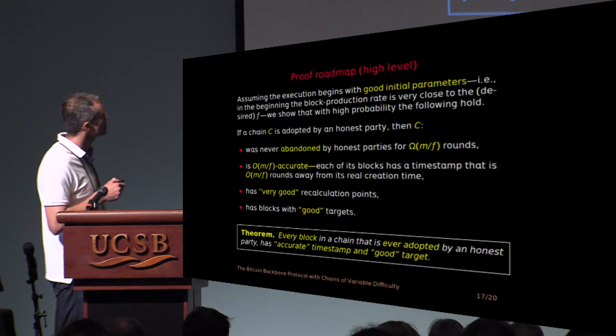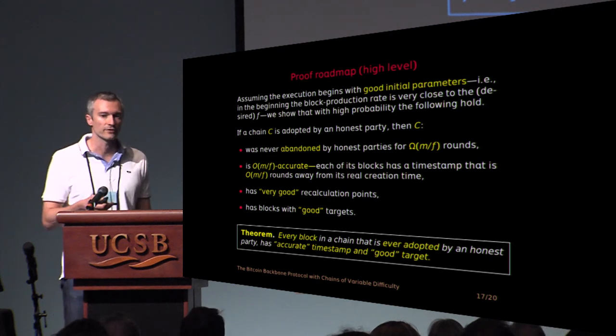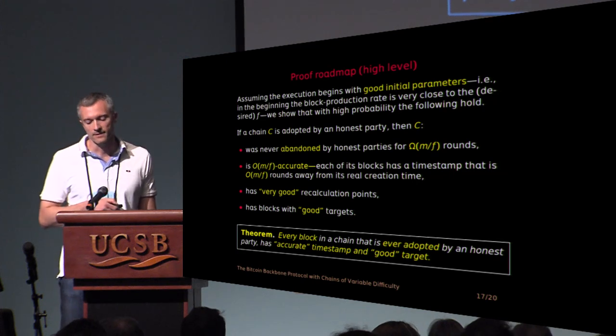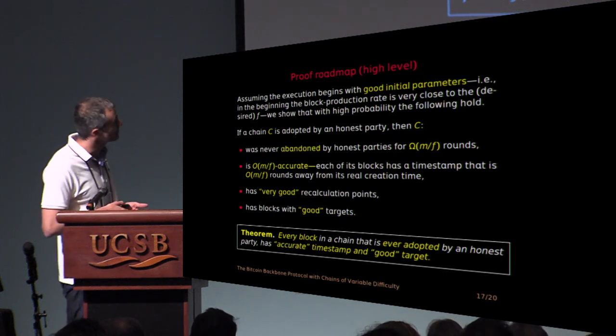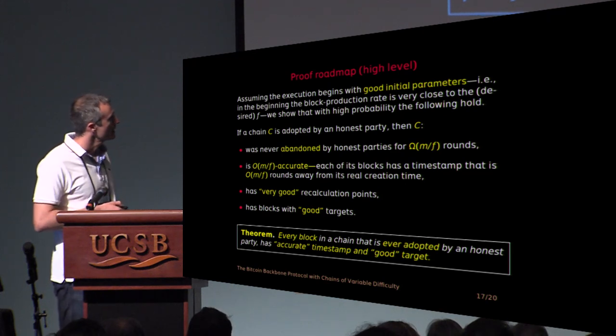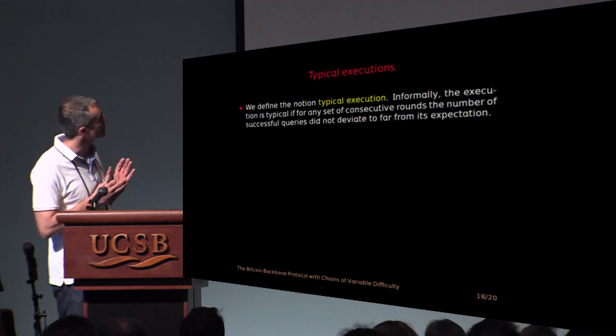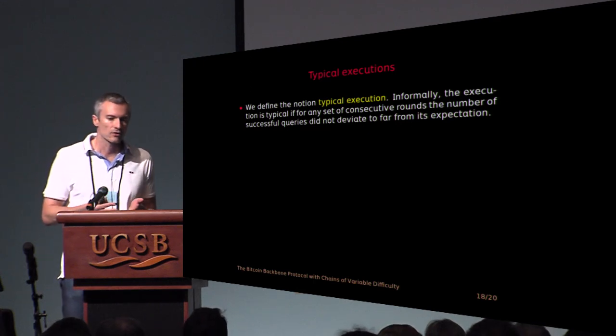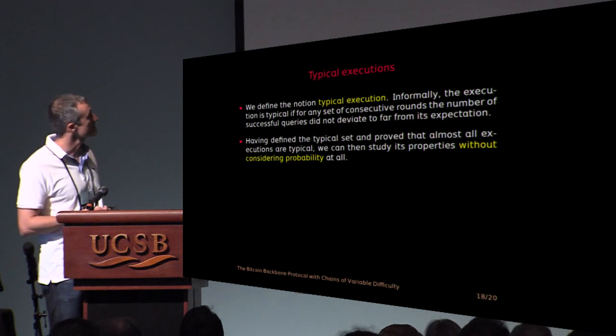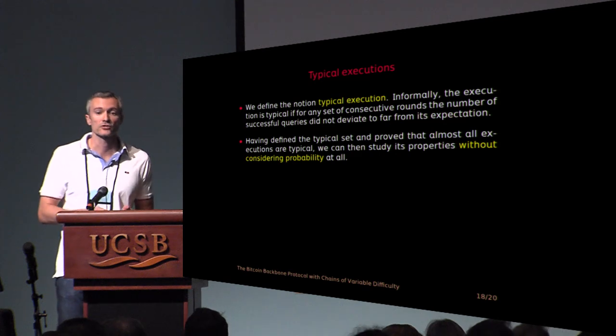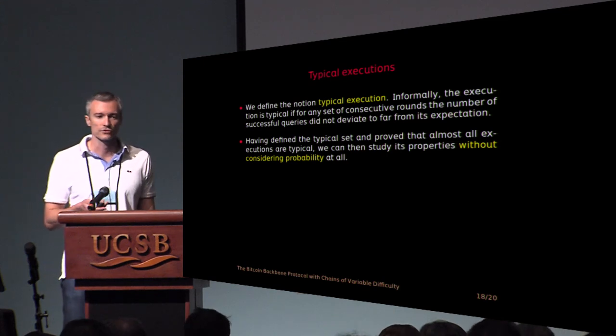So now how do you implement, how do you follow this proof roadmap? The problem here is that these statements are kind of interleaved together in a proof. So one uses the other. And if you try to do a probabilistic analysis it seems that you condition, you create conditional probability spaces that you don't understand the structure very well. And the way out of this was to define the notion of a typical execution. So we define a set of typical executions which basically contains all executions where random variables are concentrated around their expectation. And having defined a typical set of execution and proved that it contains almost all executions under the probability measure, then we can do proofs in a combinatorial manner without considering probabilities at all.